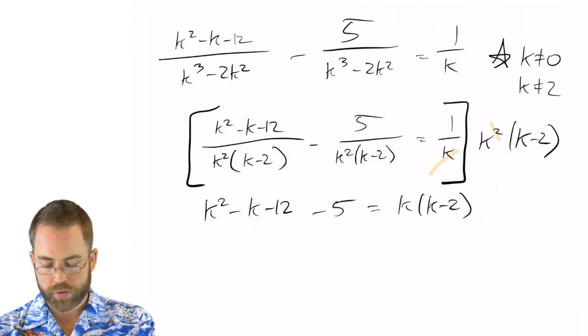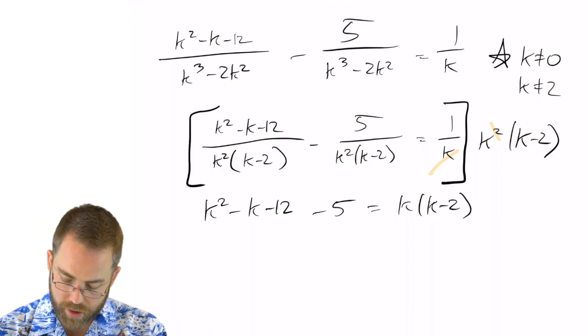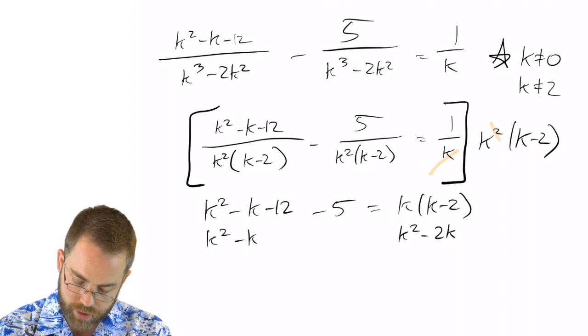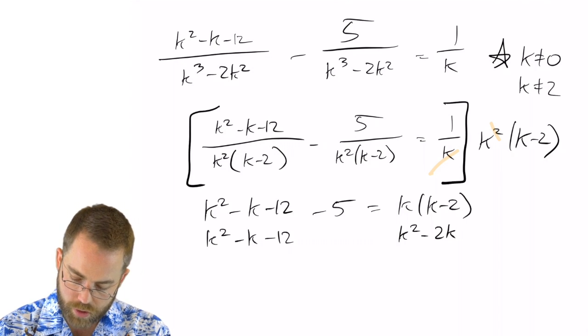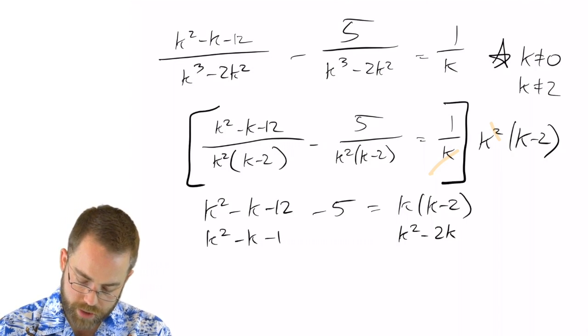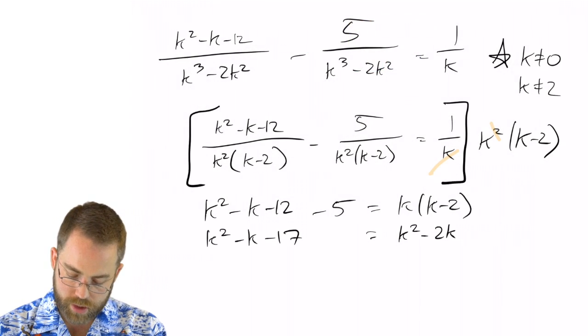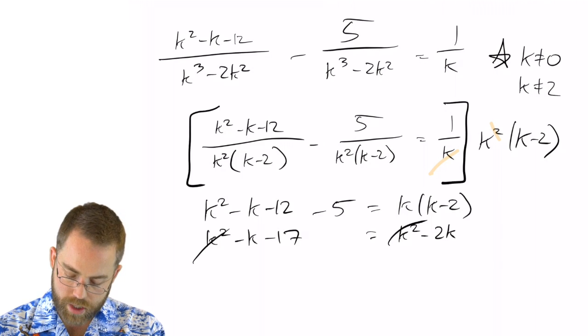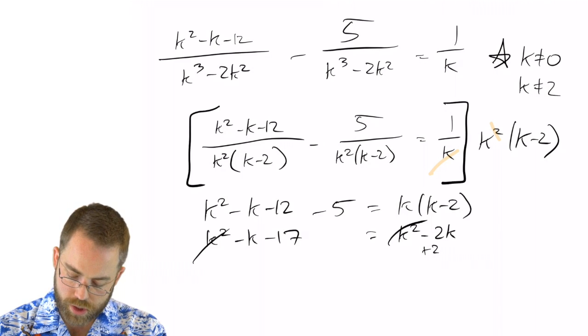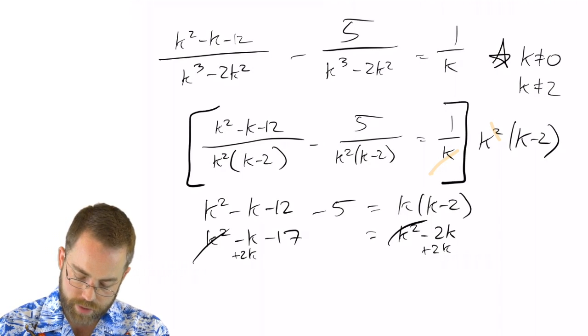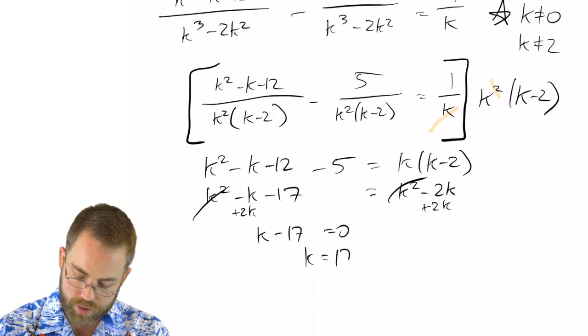And this is going to clean up way too much. That's going to be k squared minus 2k, and k squared minus k minus 12. Go ahead and combine those, minus 17. And now, this is too nice. The k squareds cancel. And if I add 2k to both sides, I've got k minus 17 equals 0, or k equals 17.